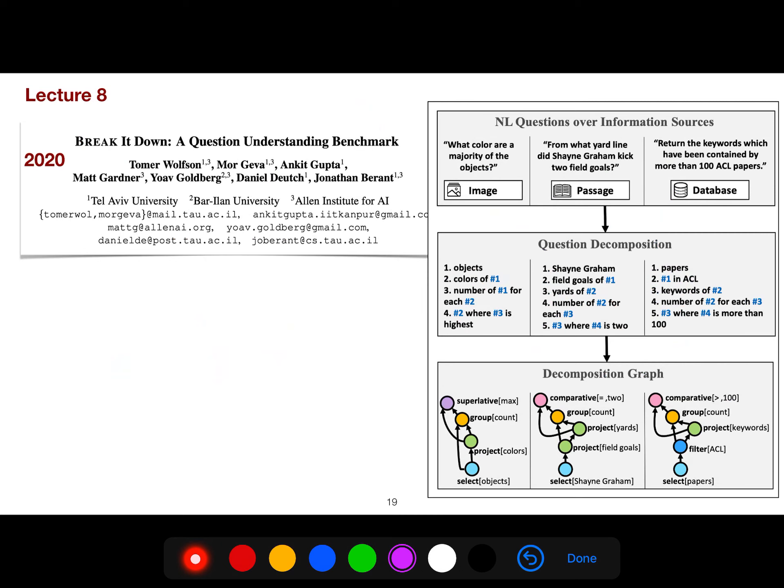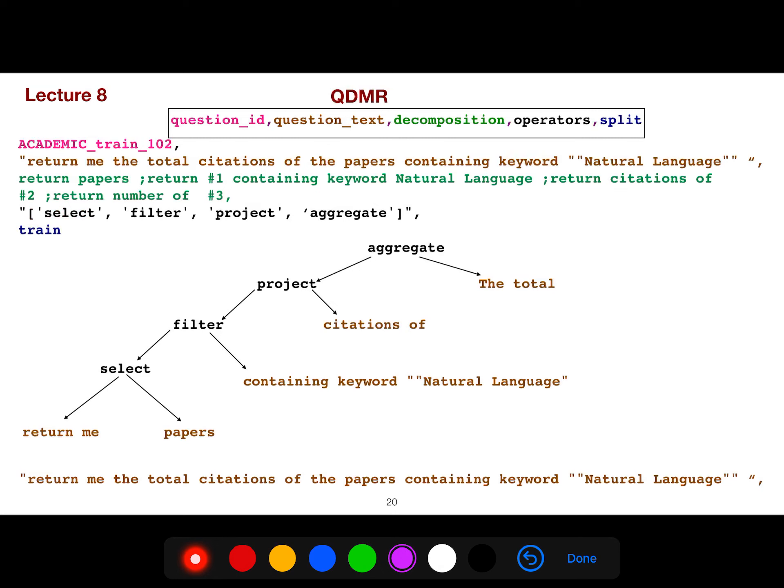Break it down. I have used this dataset in my article. I use sequence to sequence with attention to say, for example, what is the probability of superlative and then group. So it's a sequence. Select. You start with select and then project and then group and then superlative.